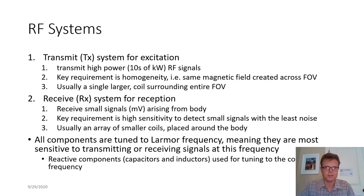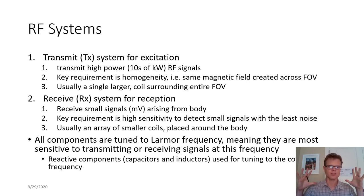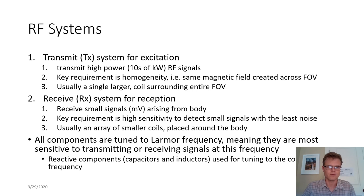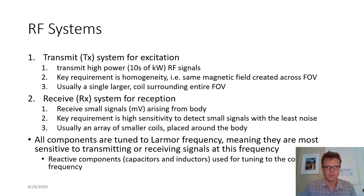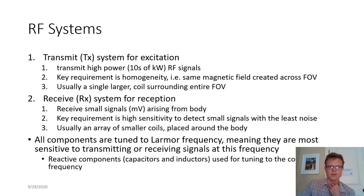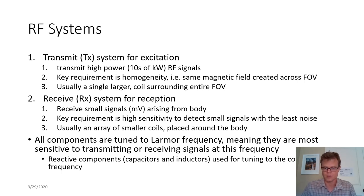The transmit system, sometimes abbreviated TX, operates at very high powers — like tens of kilowatts — and we want this to be homogeneous across our entire subject. Usually it's done by a single large surrounding coil, typically called the body coil. The receive system is trying to detect these small currents in the millivolt range that arise from the net magnetization in the body. Since these are small signals, the most important thing is sensitivity, so it's better to create small loops and put them right on top of the subject. Everything here is tuned to the Larmor frequency — the specific radio frequency — by the electronics, capacitors, and inductors in these RF coils.